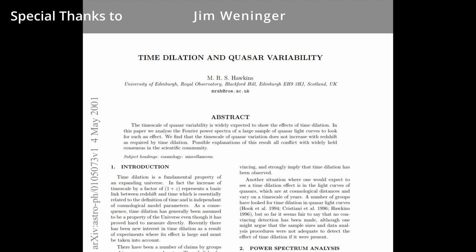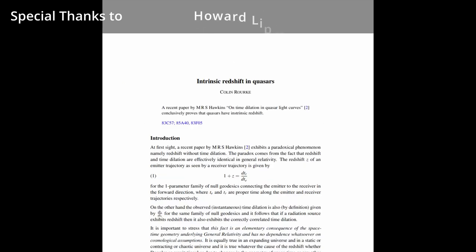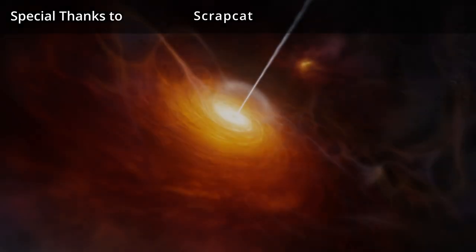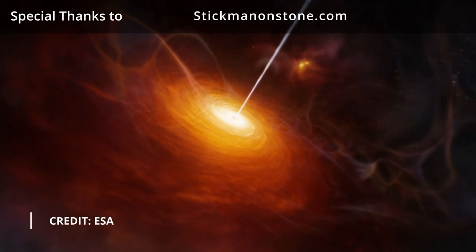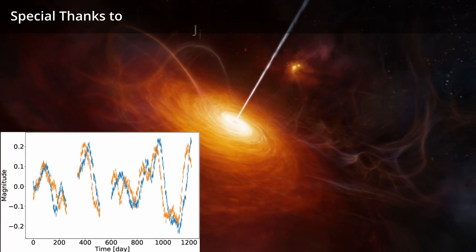We will start by examining the paper by M Hawkins titled Time dilation and Quasar variability, and then examine a paper by C Rourke who uses Hawking's data to come to a very different conclusion. In order to measure time dilation in quasar light curves, it is necessary to find a way of characterizing the timescales of variations.